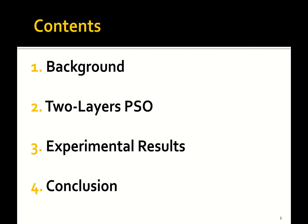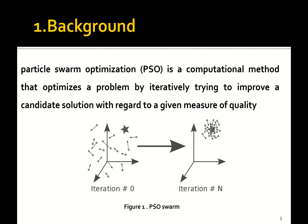Particle swarm optimization is a computational method that tries to optimize a proposed problem. As we can see in the figure, at the beginning of the PSO we have a number of particles. These particles are randomly spread in the search space, and the best location among the swarm — the best particle — is called the leader of the swarm.